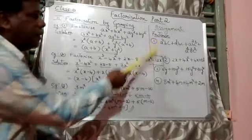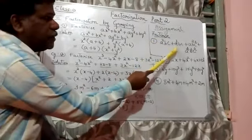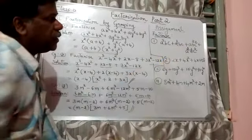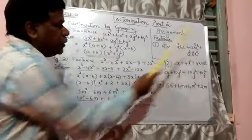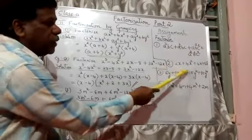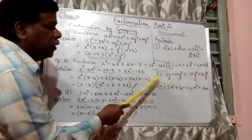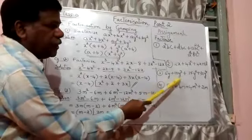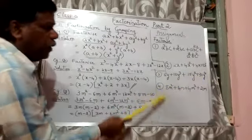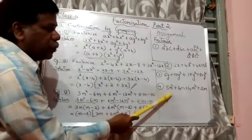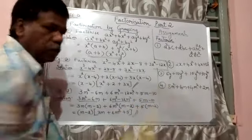Your assignment is to factorize these four questions. First: a²bc plus a³bc plus ab²c² plus a²b²c². Second: 2x plus 4x² plus 4x plus 8x². Third: 5y plus 10y³ plus 15y² plus 30y⁴. Fourth: 8m² plus 4m plus 4m² plus 2m.